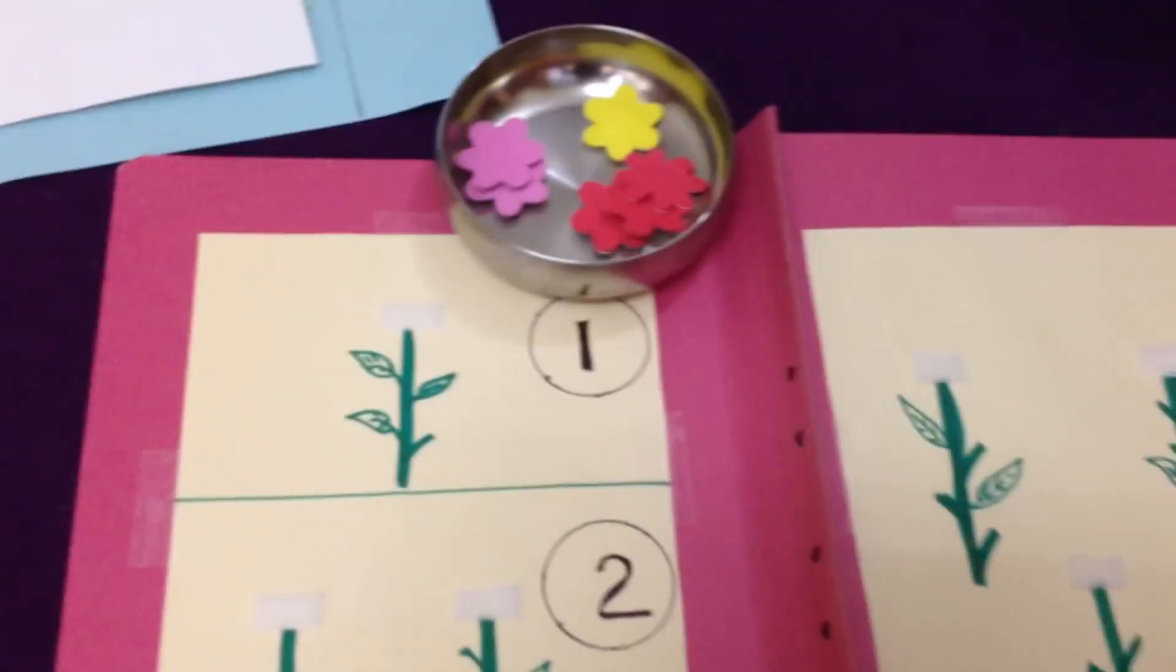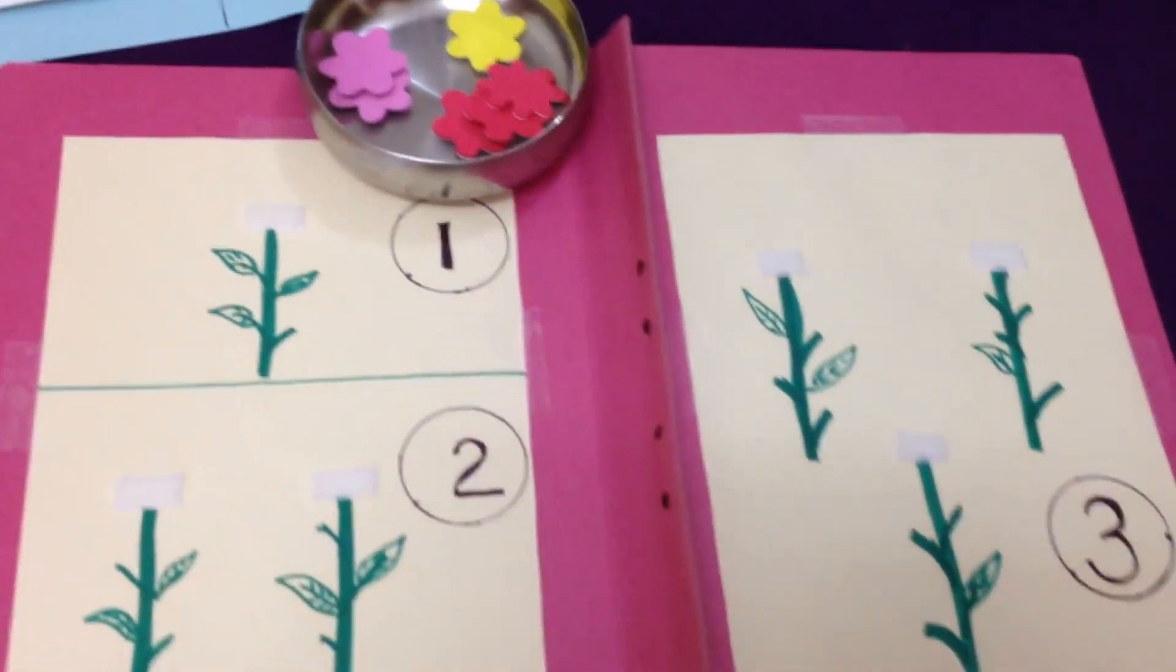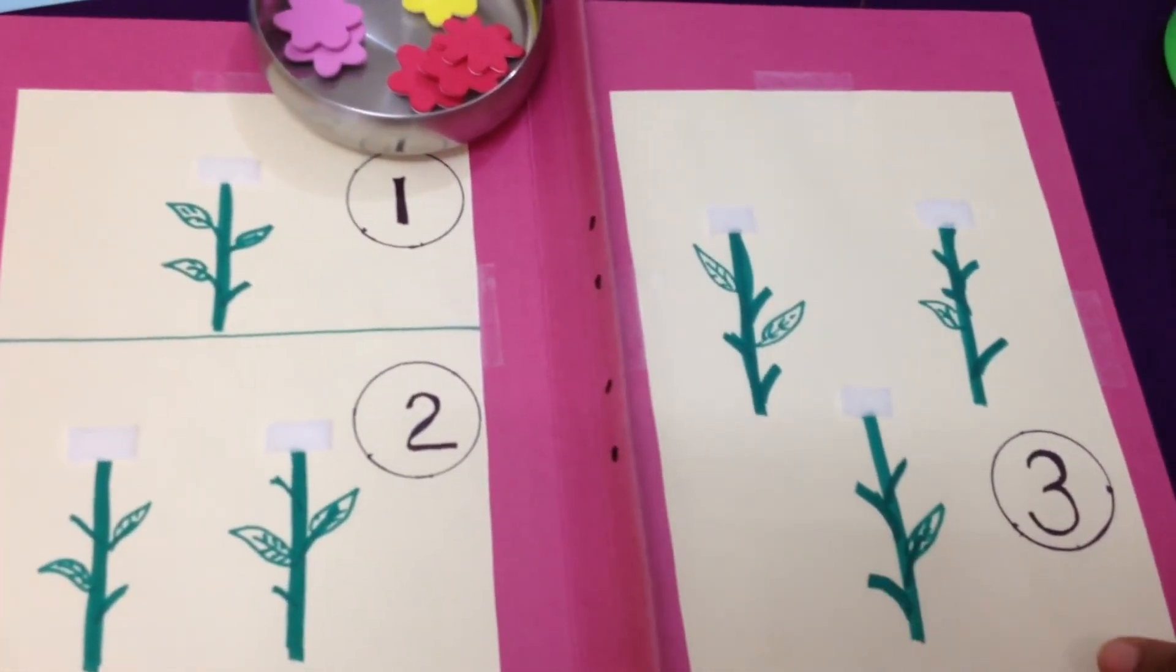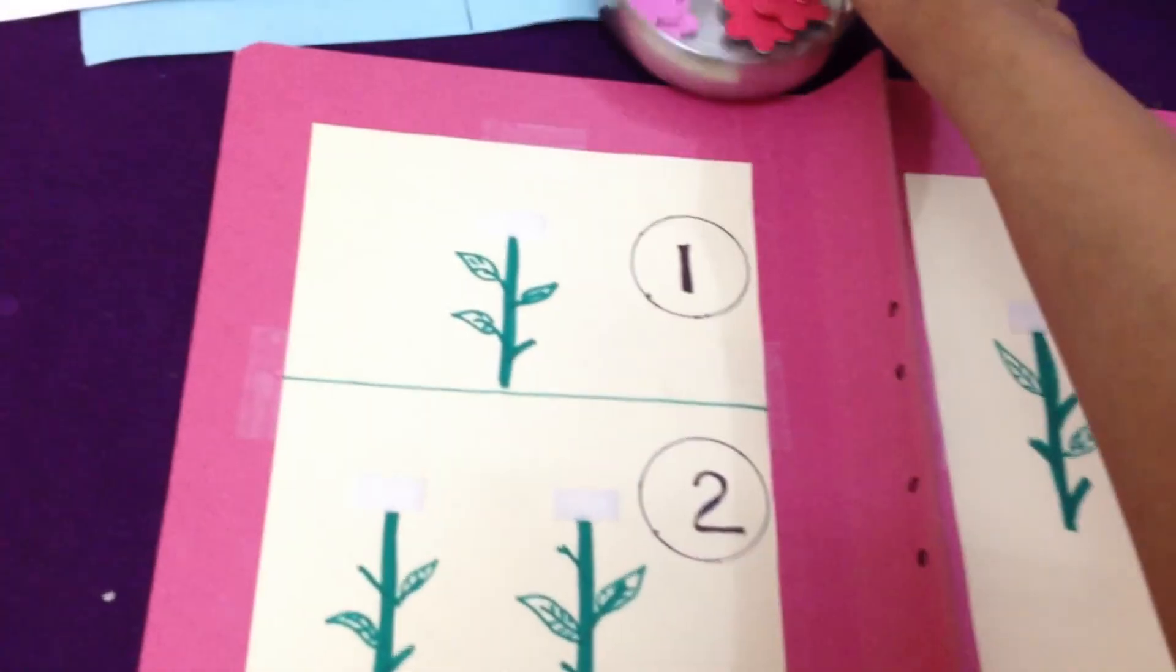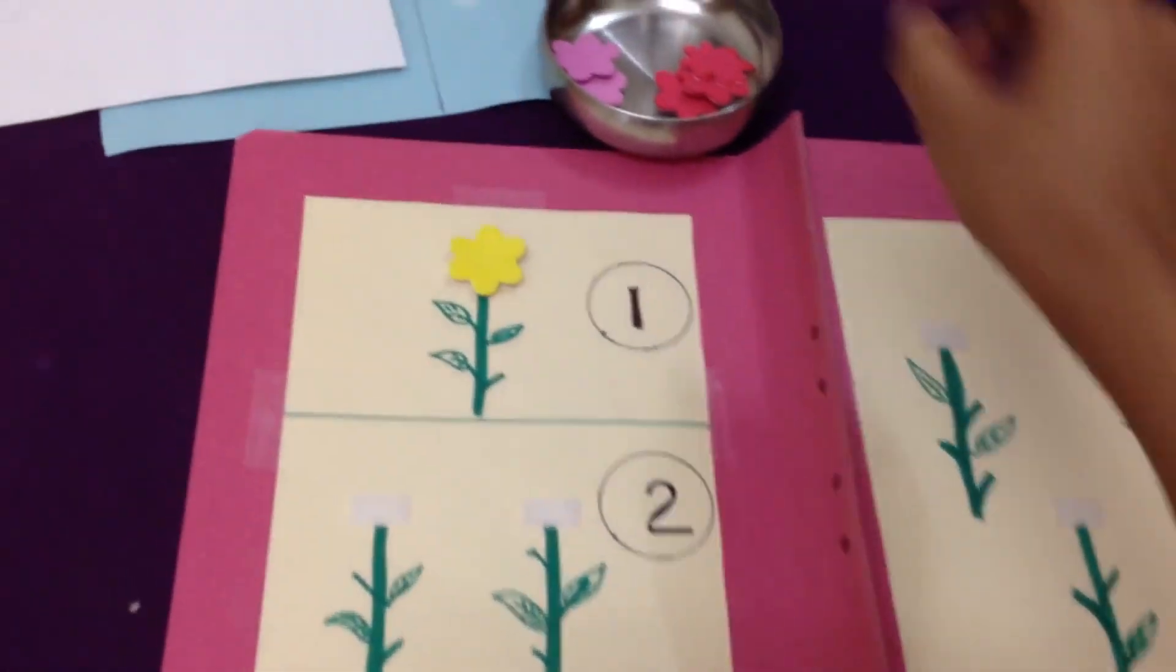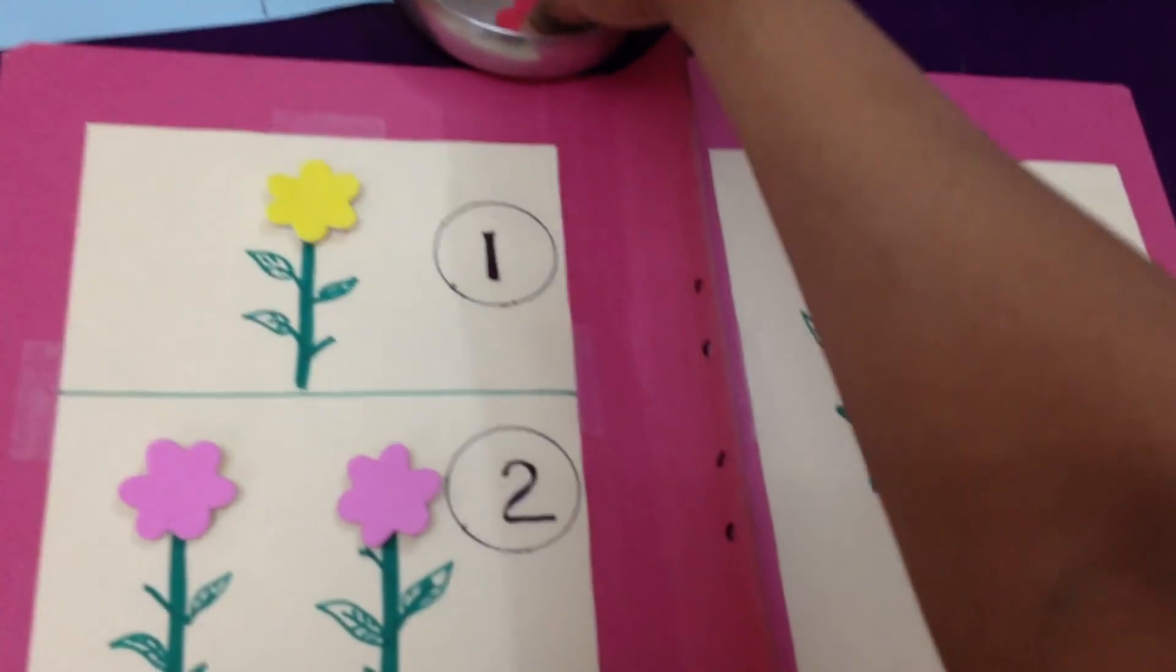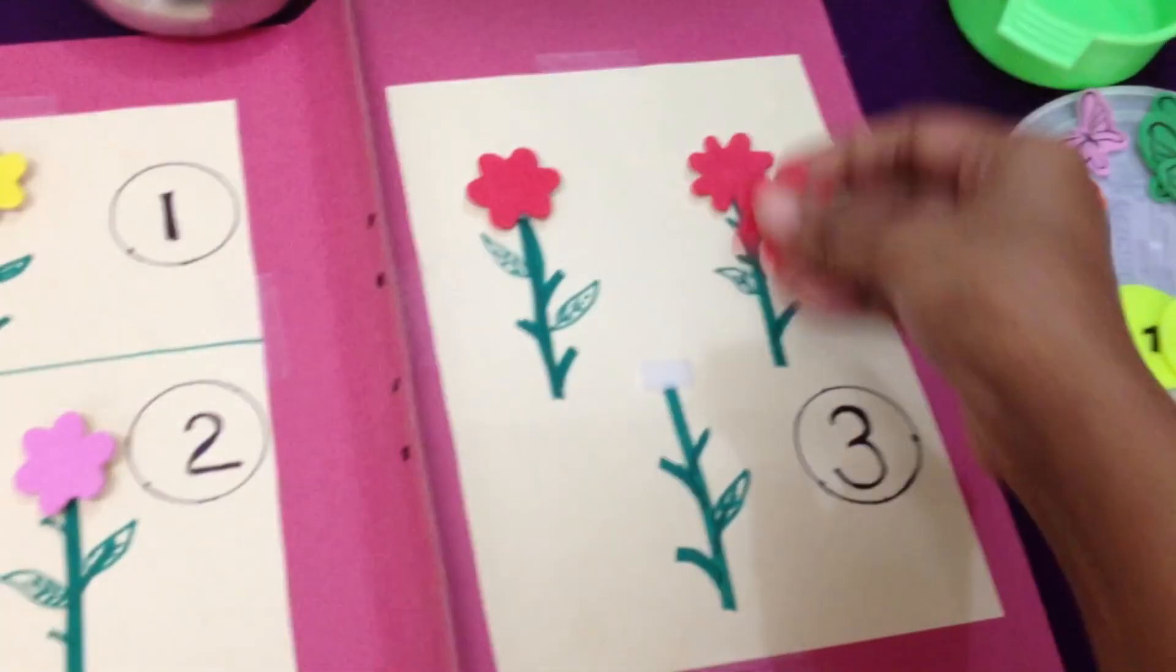You can just make things on your own. You can create these kind of file folder games with whatever you have at home. You don't need to buy stuff. He has to match, so one flower, what about here? Two flowers. What about here? Three flowers.